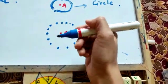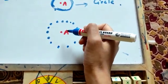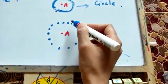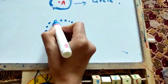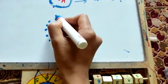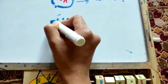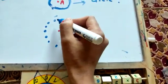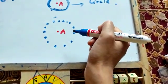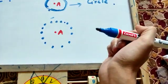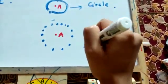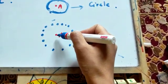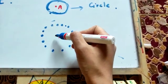Now I have asked you a question: can we draw more points around point A which are at a distance of 2 cm? Suppose I have taken 1, 2, 3, 4, 5, 6 ... total 15 points, all at a distance of 2 cm from point A. Can we draw more such points around point A at a distance of 2 cm?